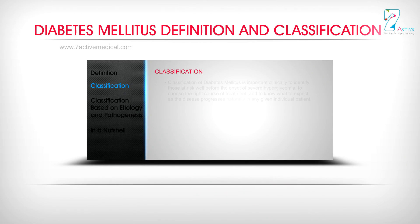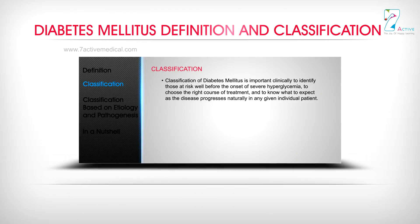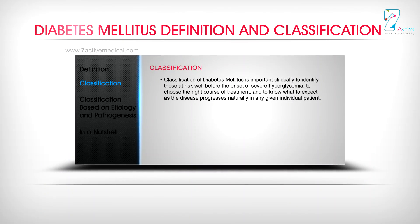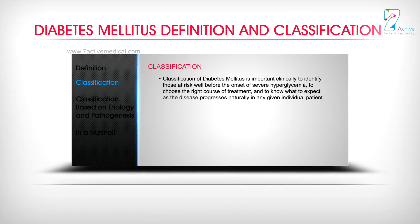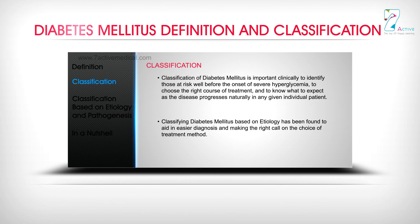Classification of diabetes mellitus is important clinically to identify those at risk well before the onset of severe hyperglycemia, to choose the right course of treatment, and to know what to expect as the disease progresses naturally in any given individual patient. Classifying diabetes mellitus based on etiology aids in easier diagnosis and making the right call on the choice of treatment method.